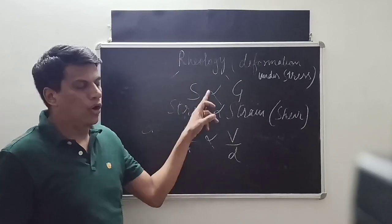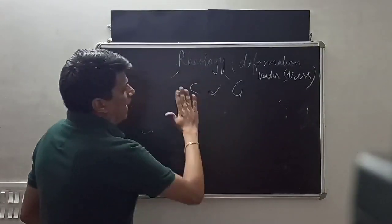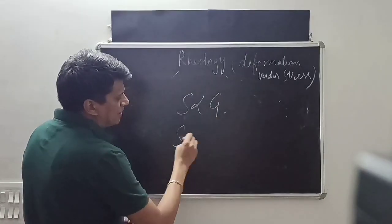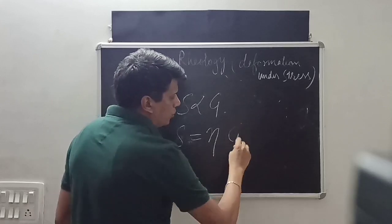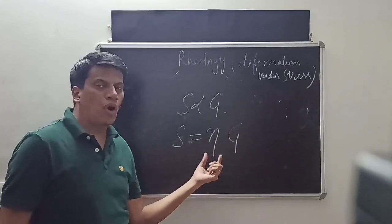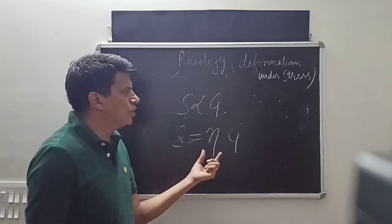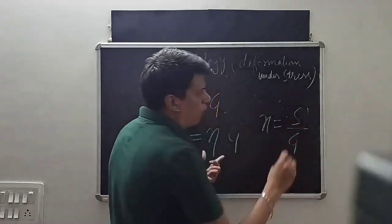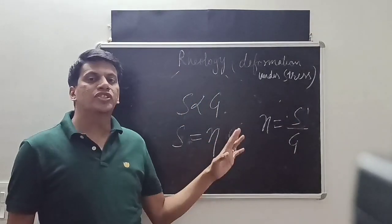According to Newton's law, S is proportional to G, so S equals a constant multiplied by G. This constant in Newton's law is called viscosity. Therefore, viscosity equals stress divided by strain.